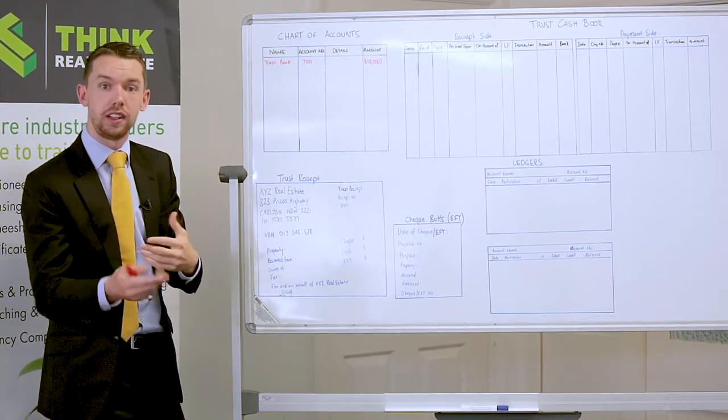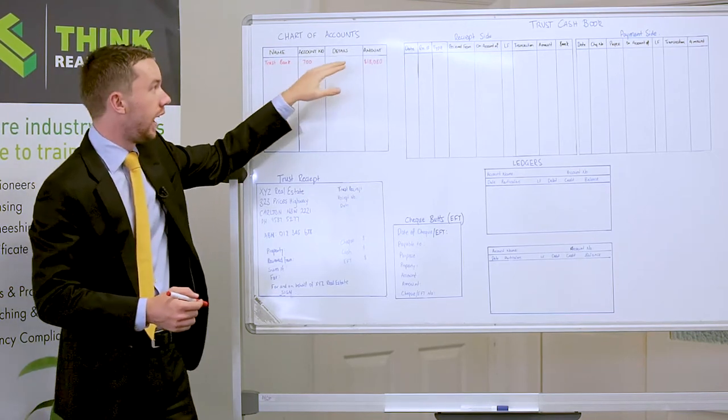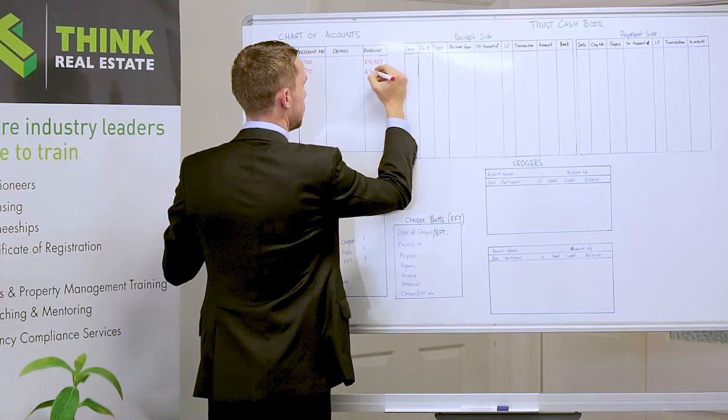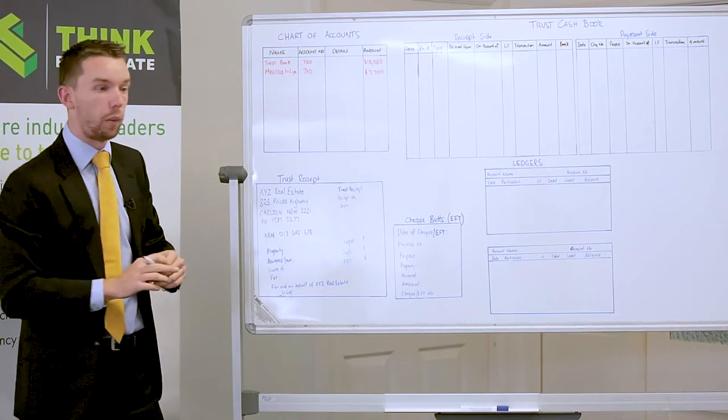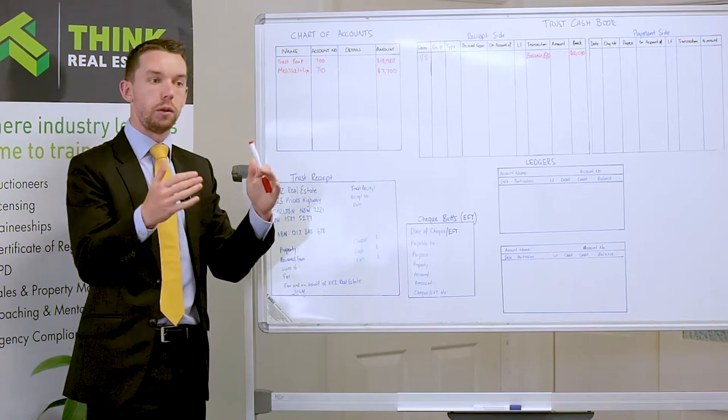In this particular case it's going to be at the start of the month. We know we are holding money on behalf of the trust bank account — their account number is 700 and the amount is $18,080. We continue to work down: Melissa to Lynn is next, number 710, with a balance of $7,700. We would continue working through the whole chart of accounts, as that's the snapshot at the start of the month. We're also going to carry that $18,080 balance forward in the receipt side of the cash book as the opening balance — balance brought forward of $18,080.